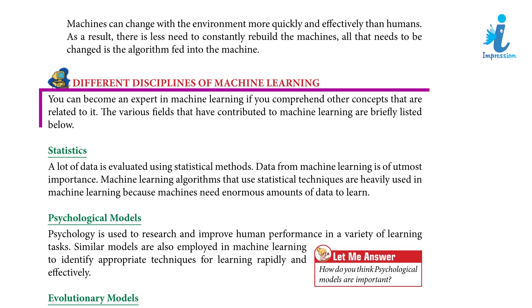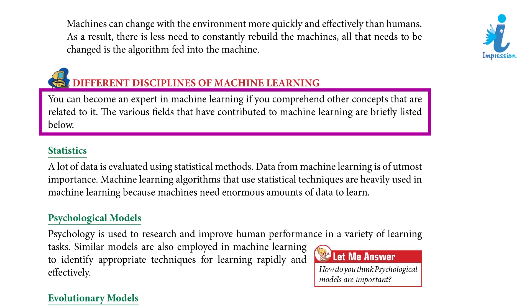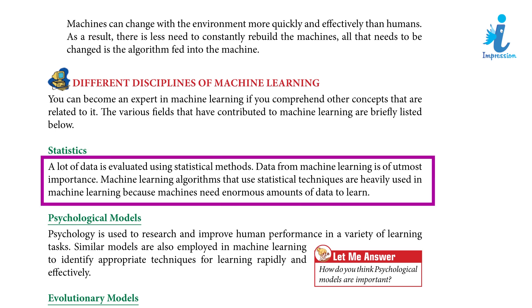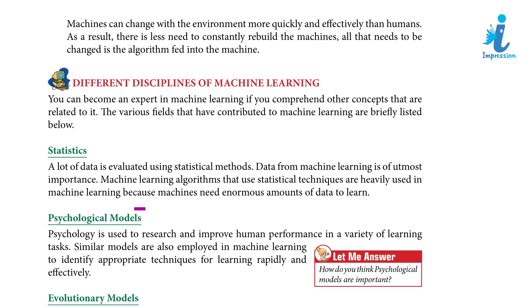Different disciplines of machine learning: You can become an expert in machine learning if you comprehend other concepts related to it. The various fields that have contributed to machine learning are briefly listed below. Statistics: A lot of data is evaluated using statistical methods. Data from machine learning is of utmost importance, and machine learning algorithms that use statistical techniques are heavily used because machines need enormous amounts of data to learn.